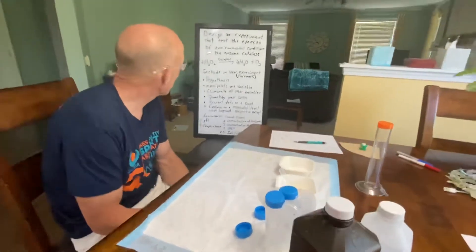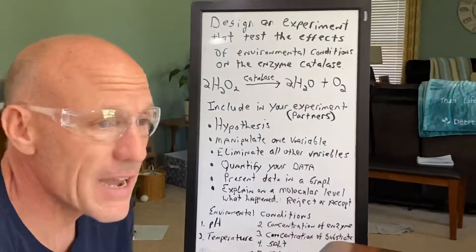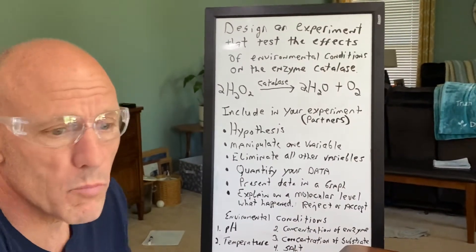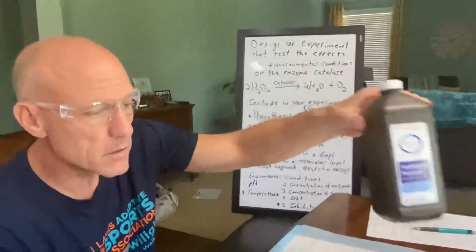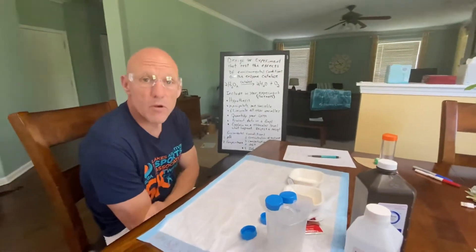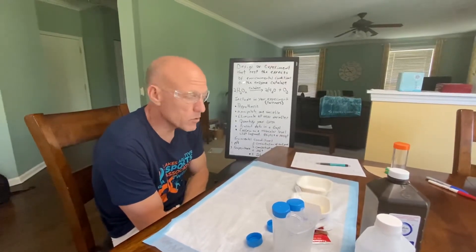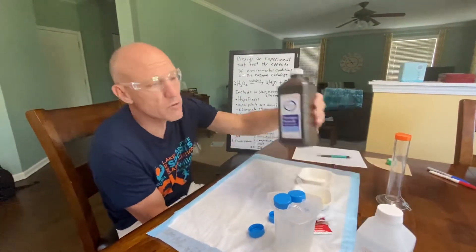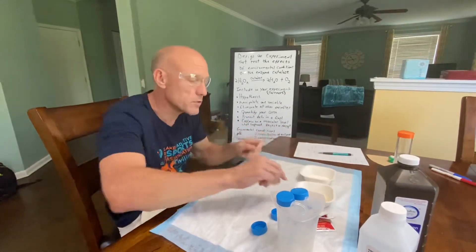You are going to be designing an experiment to test the effects of environmental conditions on enzyme catalase. Catalase is an enzyme in your body — what it does is it breaks down hydrogen peroxide, H2O2. This is a byproduct in the body that has to be removed. Catalase is the enzyme, the substrate is hydrogen peroxide, and the source of the enzyme is yeast.